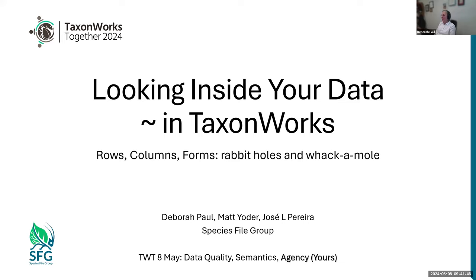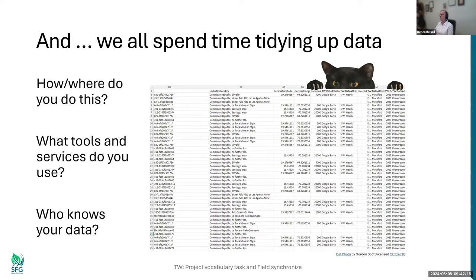We're going to take a peek at a new tool or two inside TaxOnWorks. A lot of what we do, depending on how we look at data, often we're looking at rows and columns. I've said for a long time that that's not always the easiest way to find issues in your data. So where's our agency in this process? We all spend time at our different jobs, in different roles, somewhere looking at data. I'd like to know where you fit in this process — where do you do this?